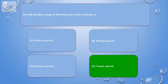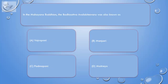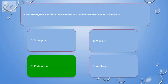Correct answer is D. Gupta period. Question. In Mahayana Buddhism, the Bodhisattva Avalokiteshwar was also known as — A. Vajrapani. B. Manjushri. C. Padmapani. D. Maitreya. Correct answer is C. Padmapani.